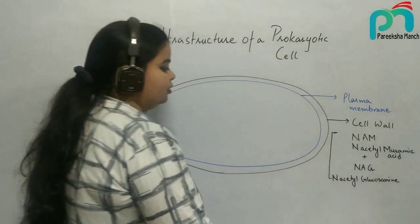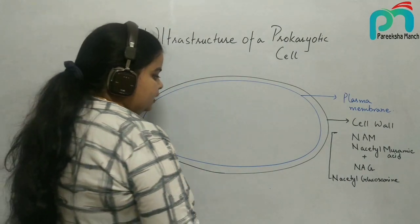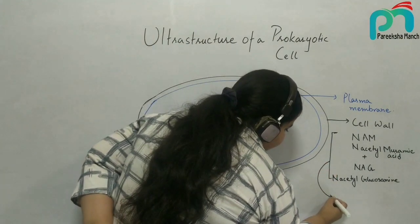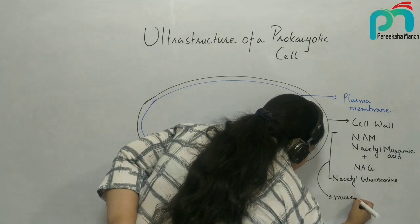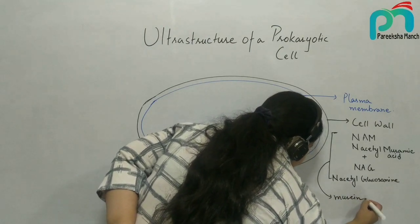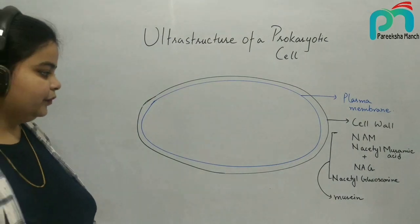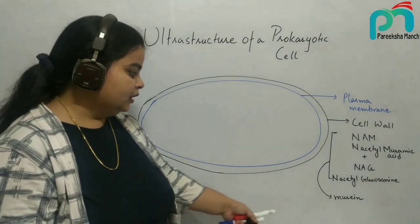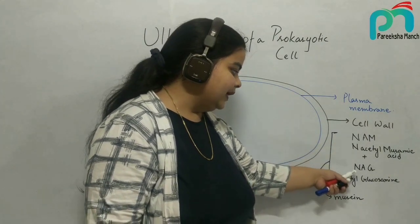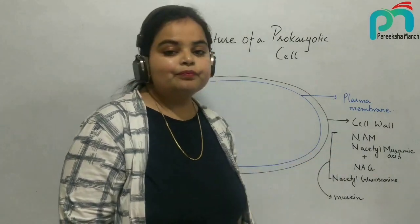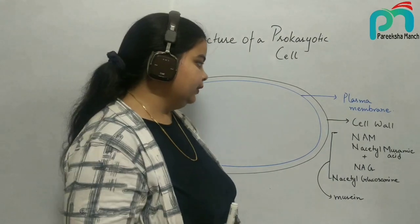Glucosamine is also a constituent of chitin. Together we call this murein. Scientifically, this murein is composed of NAM and NAC. These are polysaccharide molecules.